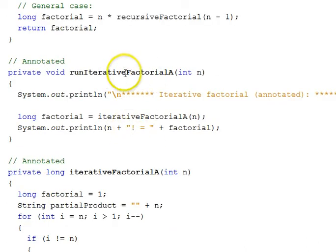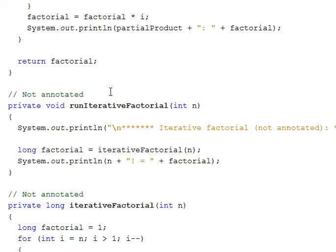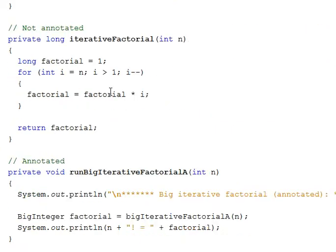Our iterative solutions, we have annotated versions and a non-annotated. For the iterative solution, let's go right to the non-annotated solution. Here it is, right here. Again, we get N in. Then we start out with a long called factorial, set it equal to 1. Then we have a for loop. We're going to iterate here for int i, starting at N. We're going to be reducing i by 1 each time in this loop. And as long as i is greater than 1, we're going to compute factorial, the current value, times i, and assign it to factorial.